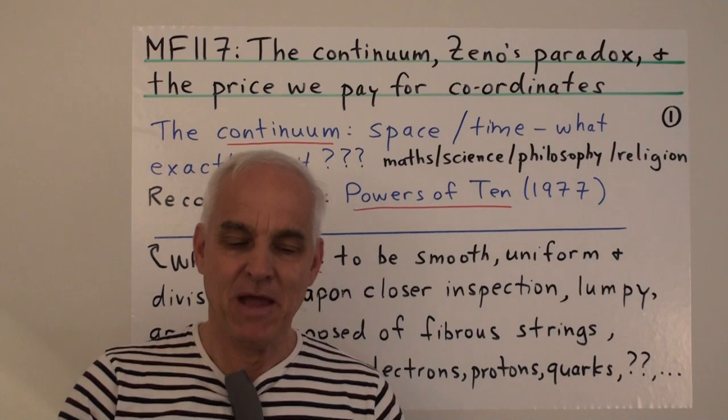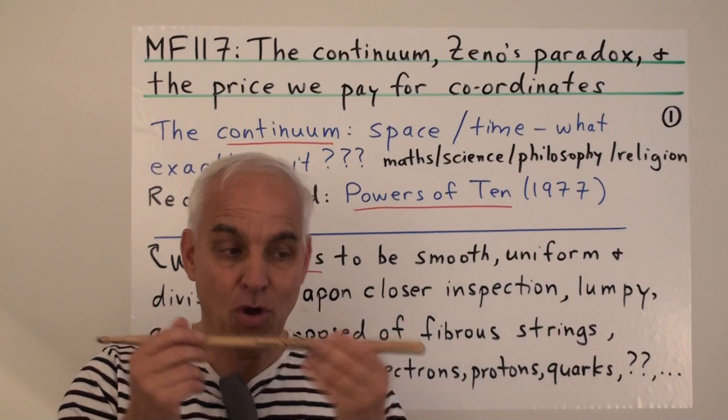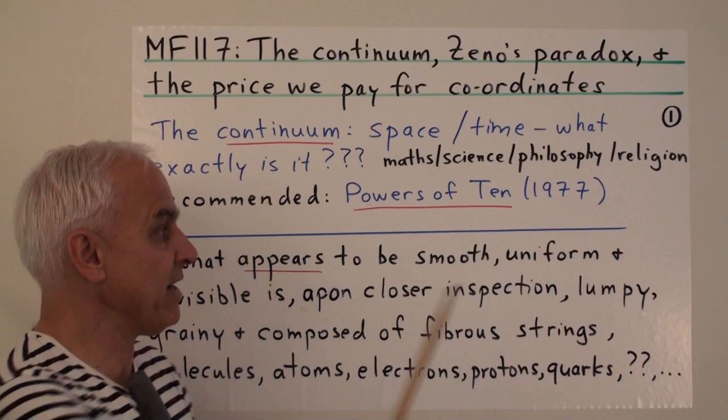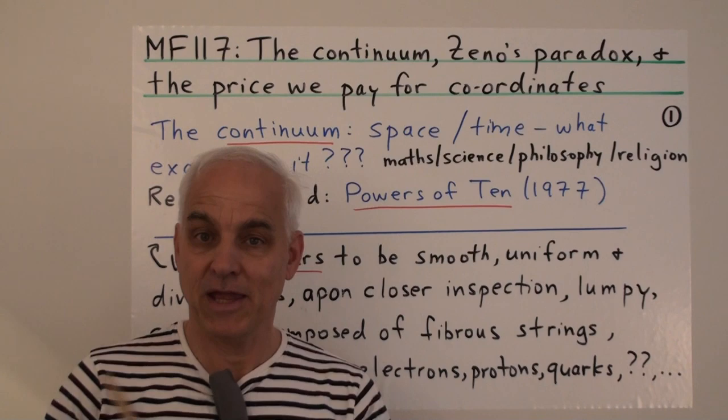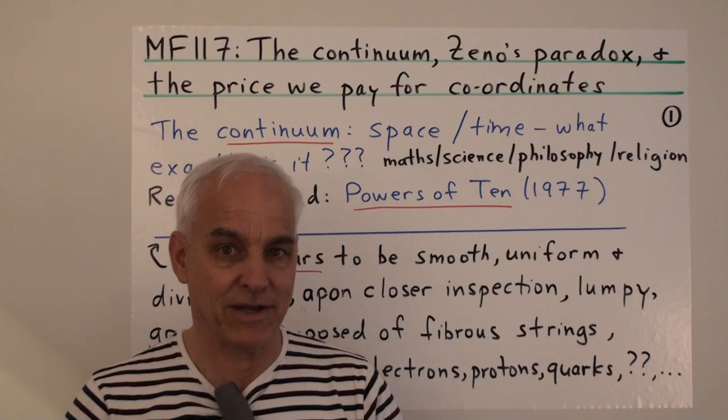One nice starting point for the discussion might be to think about the different scales that we can look at when we're talking about the continuum. We could look at it up close, or we could try to look at it from far away and get a much bigger sense of scale. For that, there's a lovely YouTube video of a movie made in 1977 called Powers of Ten, and I strongly recommend that you have a look at this. It's a nice orientation to the huge differences in scales in our visible universe.